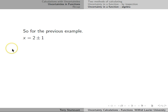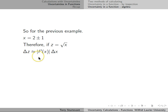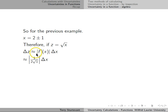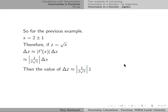For the previous example, x is 2 plus or minus 1. If we take the square root of x, the uncertainty in the function is the derivative of the function times delta x. That is 1 over 2 root x times delta x. The absolute value signs are here because uncertainties are always expressed as positive quantities. So the uncertainty in the square root of x is 1 over 2 root x times the uncertainty in x, which in this case is 1.